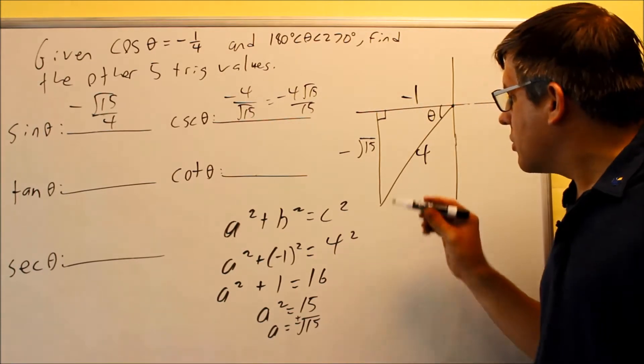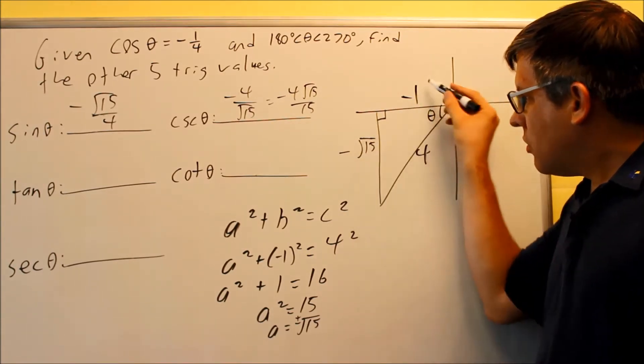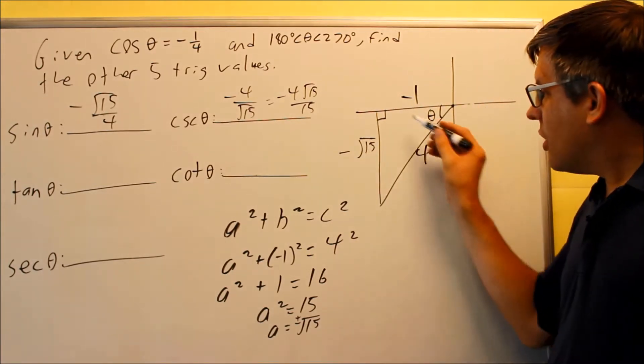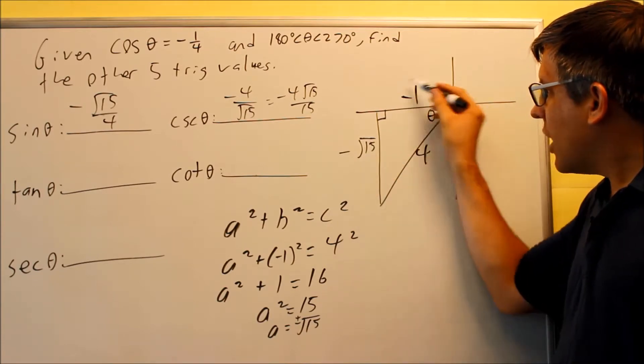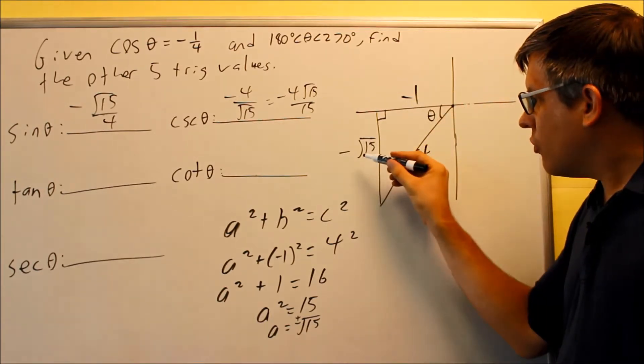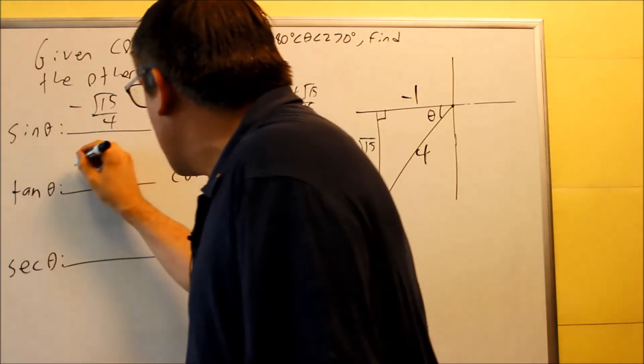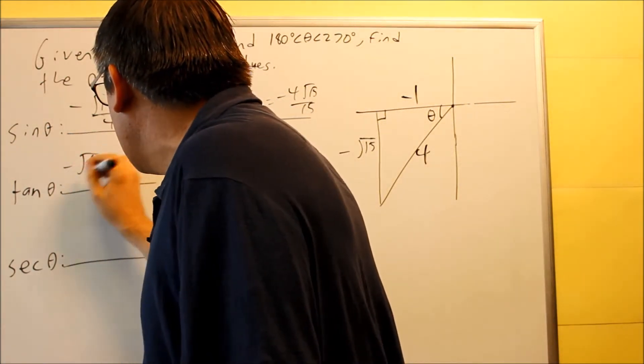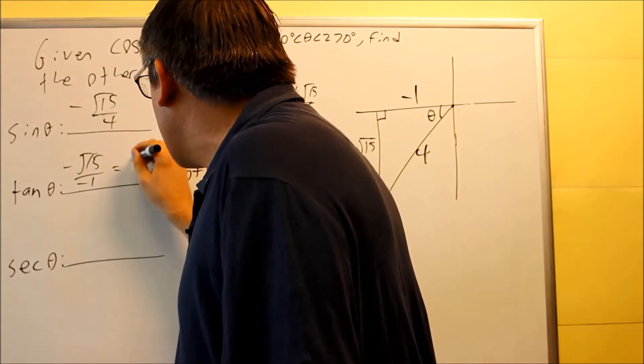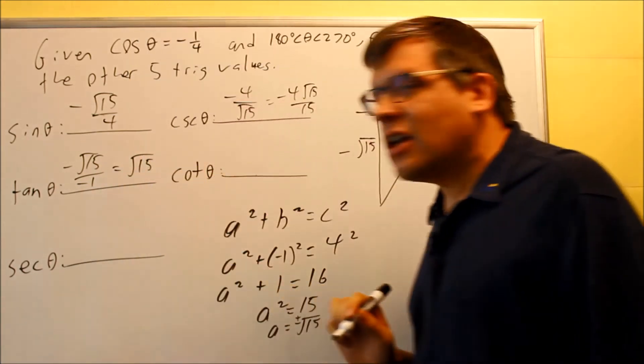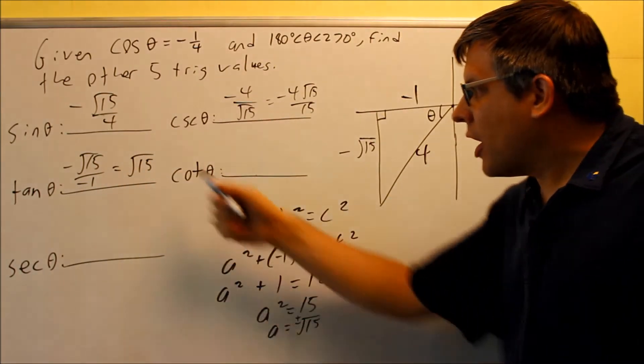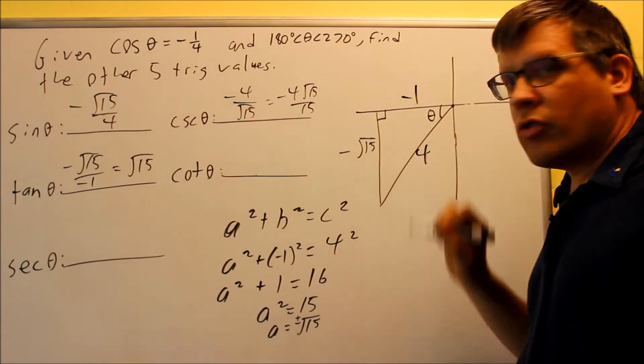Next, we're going to do tangent. Tangent is opposite over adjacent. The opposite is negative root fifteen, the adjacent is going to be negative one. So negative square root of fifteen divided by negative one is what we're going to do for tangent. So if I do that, that means the negatives are going to cancel, and I get just square root of fifteen for my tangent, opposite over adjacent.